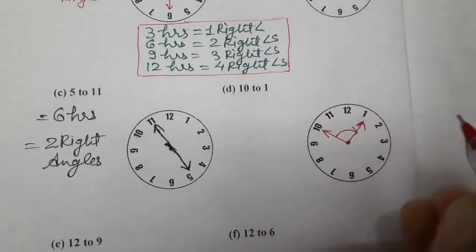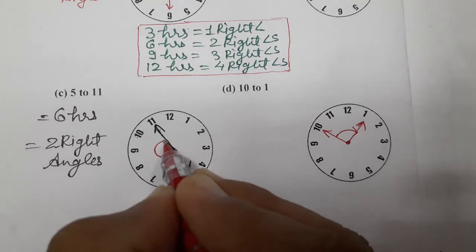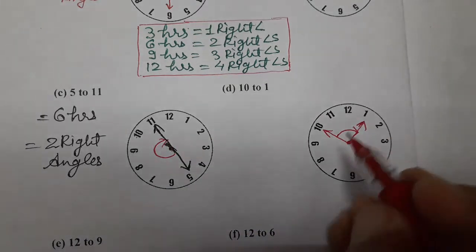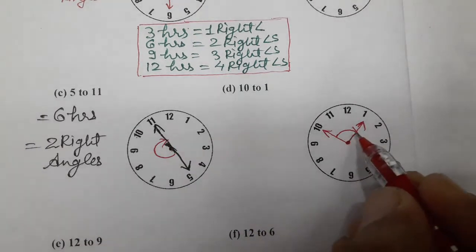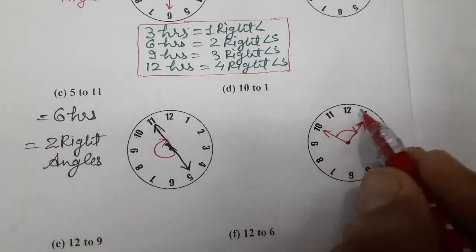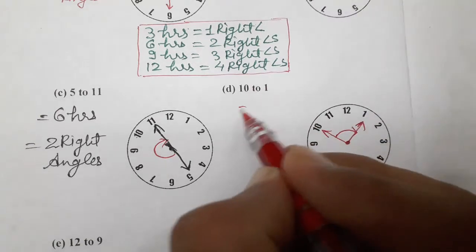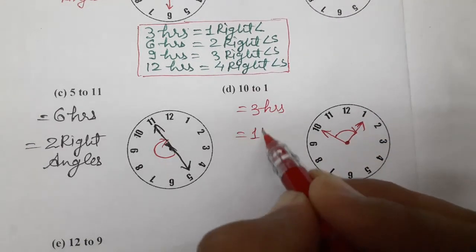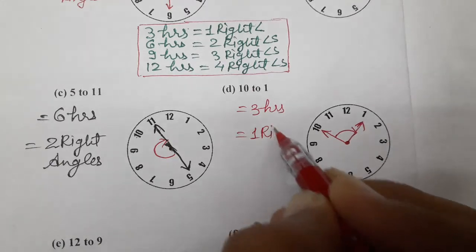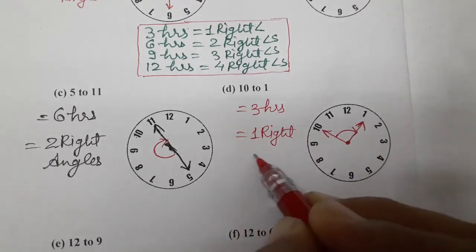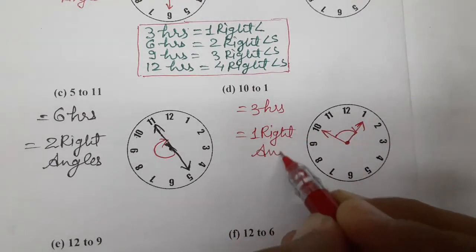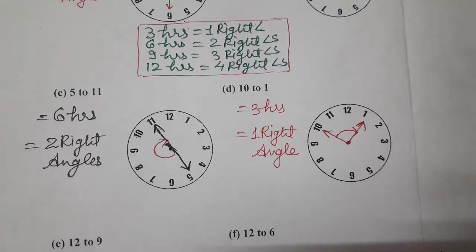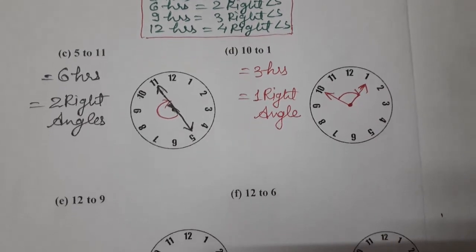Next comes (d) 10 to 1. Where is 10? Here. And 1 is here. So 1, 2, 3 — put the arrow to show how we are moving in every case. So 10 to 1 is 3 R's, and 3 R's means we know 1 right angle.